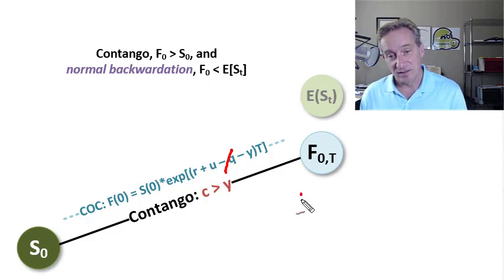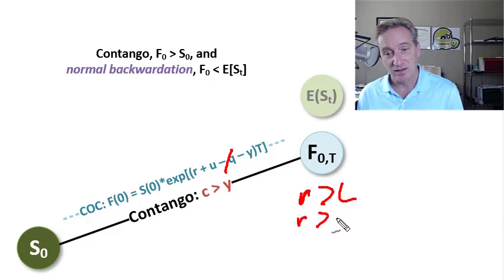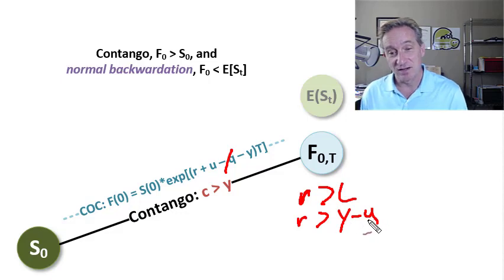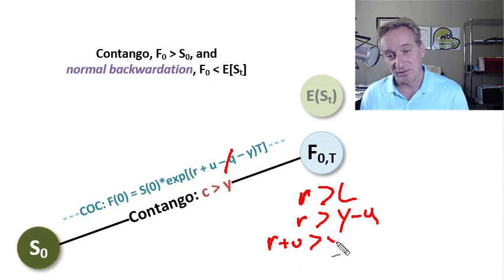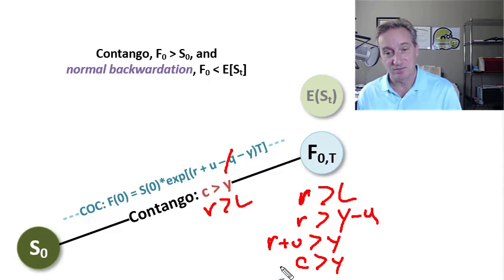The other inference we could make is that the risk-free rate is greater than the lease rate. The lease rate is the convenience yield minus the storage cost — if I own the commodity and lend it to you, my rational lease rate would be the convenience that I forgo minus the storage cost that I'm saving. If I add the storage cost back to both sides, I have risk-free rate plus storage cost is greater than the convenience yield. So the notion that the risk-free rate is greater than the lease rate is identical to cost of carry being greater than the convenience yield.